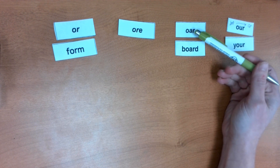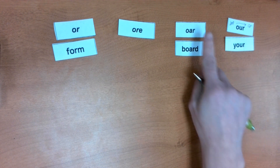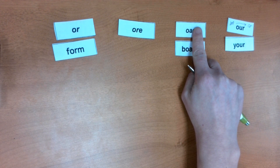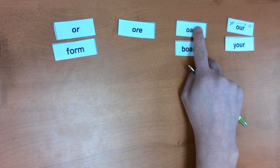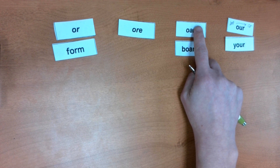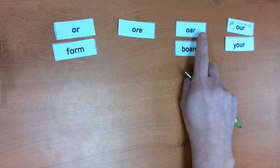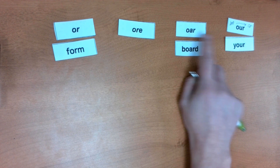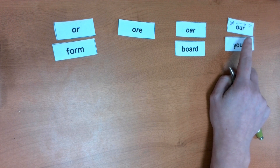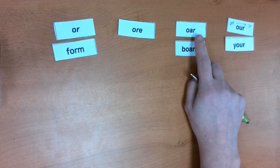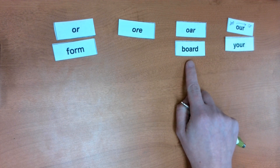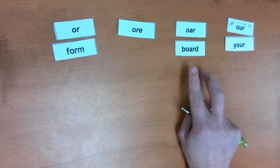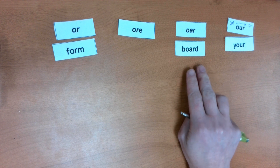Then we've got O-A-R. When we think about that double vowel O-A, we normally think of the O sound — like in 'boat' or 'road'. The letter R colors that sound too, but not quite as dramatically. This one also says the OR sound, like in 'board'.